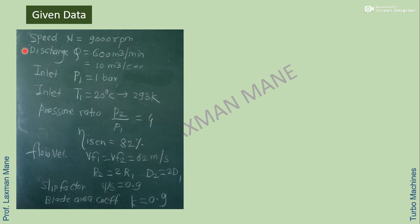Given values: speed, discharge, inlet static pressure and temperature, pressure ratio, isentropic efficiency, flow velocity (constant), radius relation R2 equals 2 R1, slip factor, and blade area coefficient K.